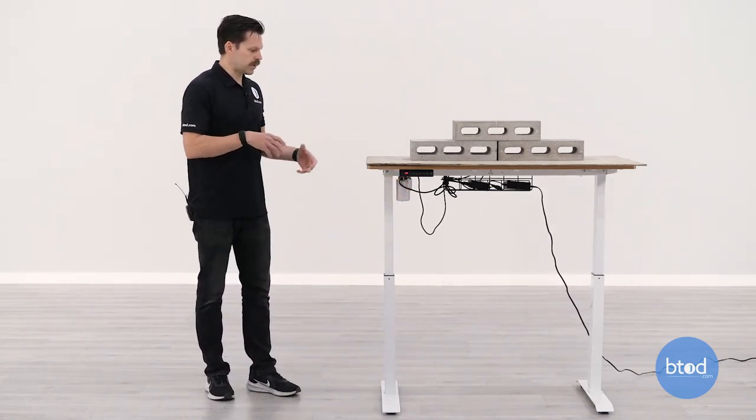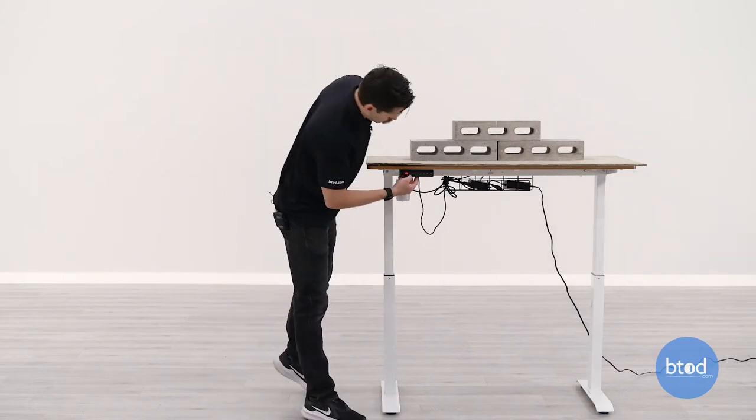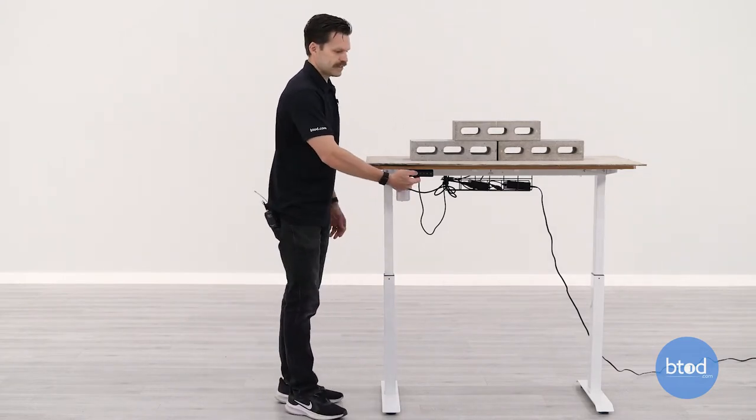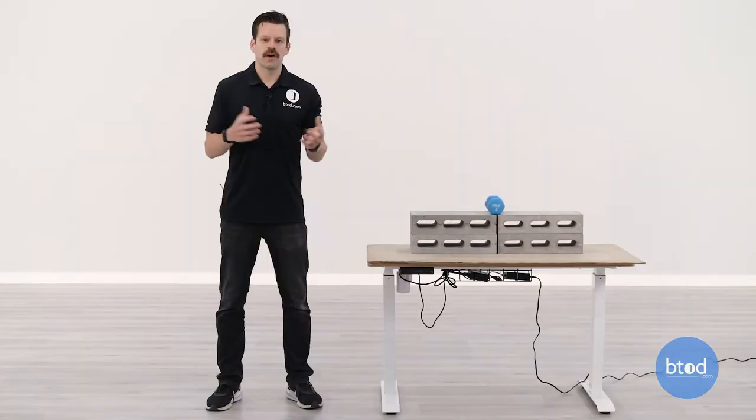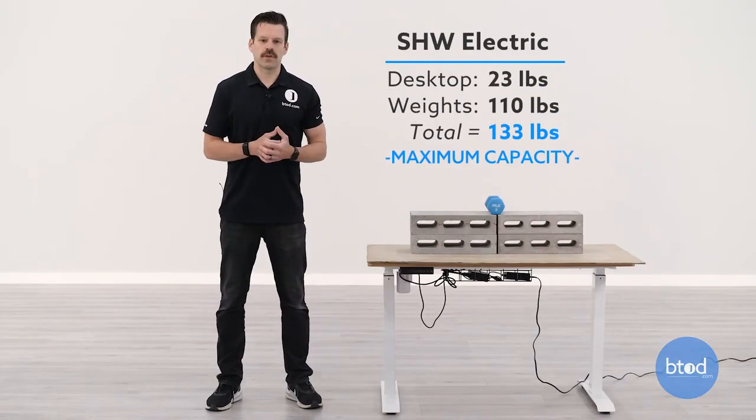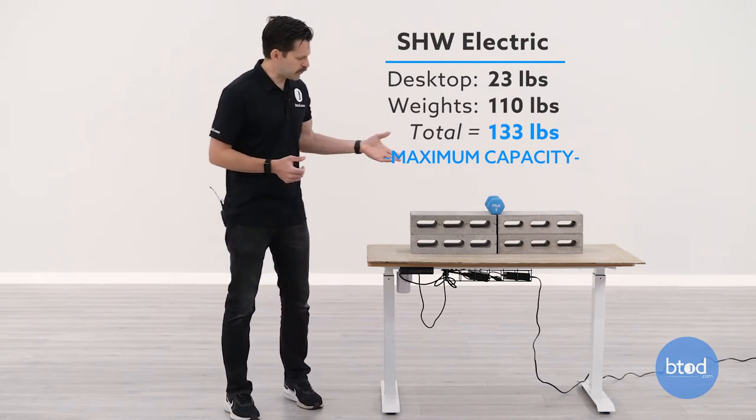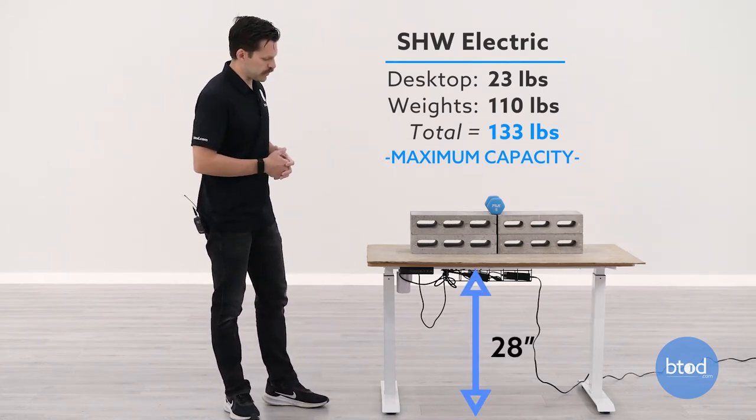So we're going to bring this back down to the bottom. We'll add a little bit of additional weight to allow us to get to 133 pounds. And then we'll show you what it's like there. For our final test, we've got 133 pounds on here. You can see the setup, four cinder blocks plus the five pound dumbbell, the weight of the surface.